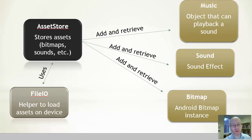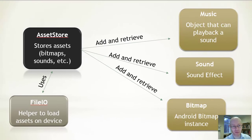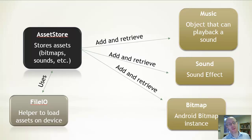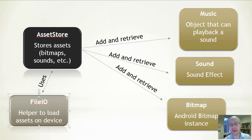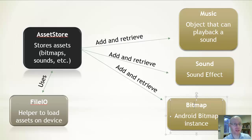Next we'll look at the asset store. It contains all the things we've loaded in and makes use of a file IO manager to help load them. Currently, in the simple architecture, there are three types of asset: a music track that we stream, a sound clip we can play, and a bitmap we can display.